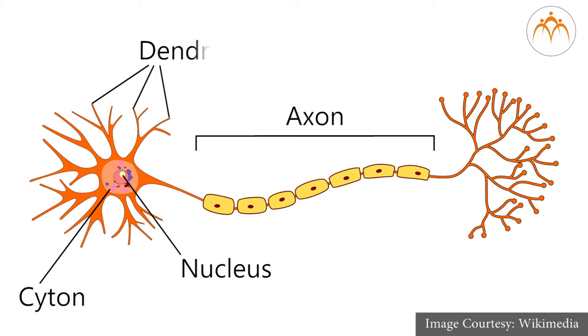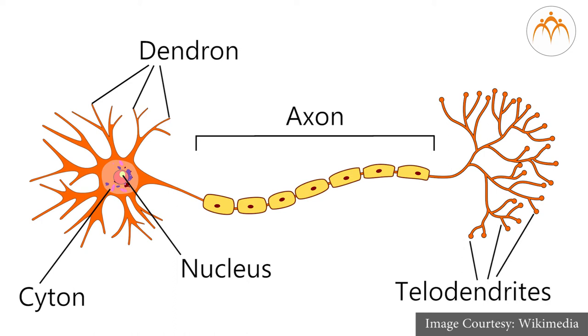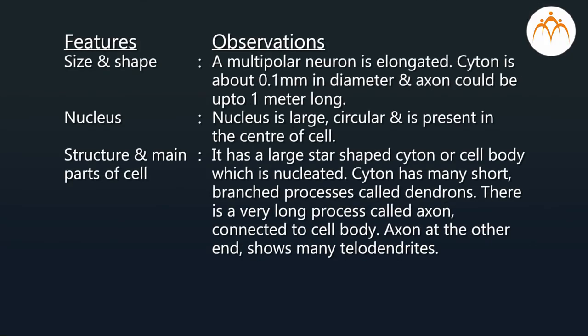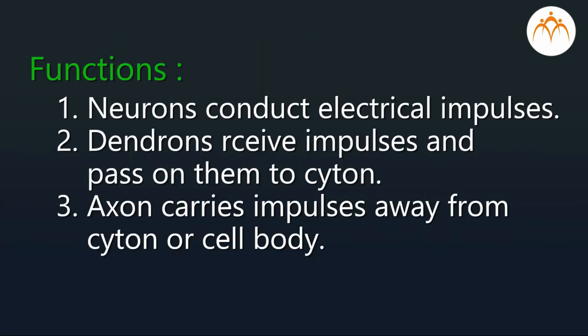The cytone has many short branched processes called dendrons. There is a very long process called the axon, connected to the cell body. The axon at the other end shows many telodendrites. Neurons conduct electrical impulses — dendrons receive impulses and pass them on to the cytone, while the axon carries impulses away from the cytone or cell body.